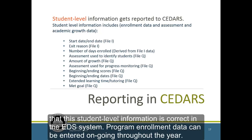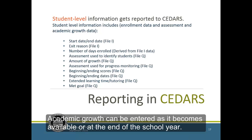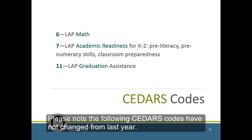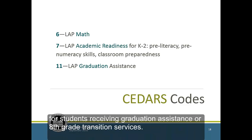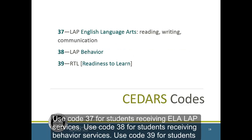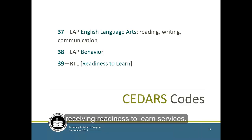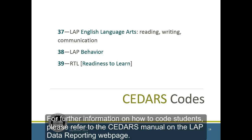Program enrollment data can be entered ongoing throughout the year. Academic growth can be entered as it becomes available or at the end of the school year. Please note the following CEDARS codes have not changed from last year: Use code 6 for students being served with math supports. Use code 7 for students in grades K-2 receiving LAP academic readiness. Use code 11 for students receiving graduation assistance or 8th grade transition services. Use code 37 for students receiving ELA LAP services. Use code 38 for students receiving behavior services. Use code 39 for students receiving readiness to learn services. For further information on how to code students, please refer to the CEDARS manual on the LAP data reporting webpage.